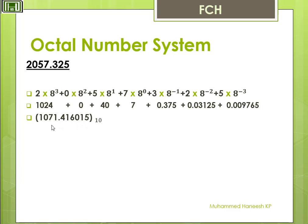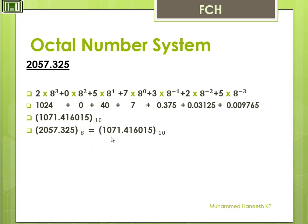It is the decimal number system corresponding to the octal number system. That is 2057.325 to base 8 equals 1071.416015 to base 10. We need to multiply each digit value by its positional power of 8 — 8 raised to 3, 8 raised to 2, 8 raised to 1, 8 raised to 0, then 8 raised to minus 1, 8 raised to minus 2, 8 raised to minus 3 — and that is the answer.